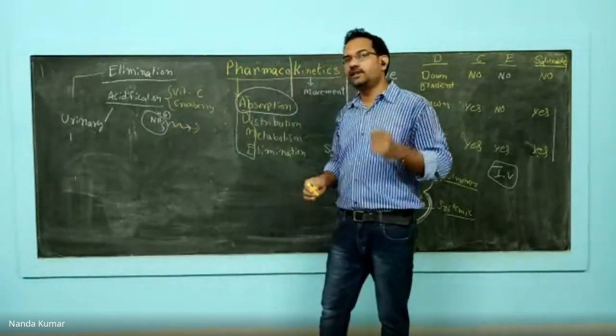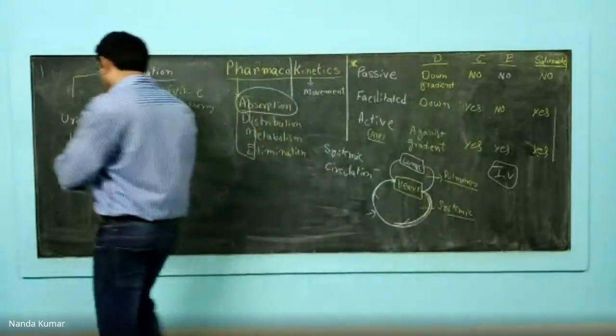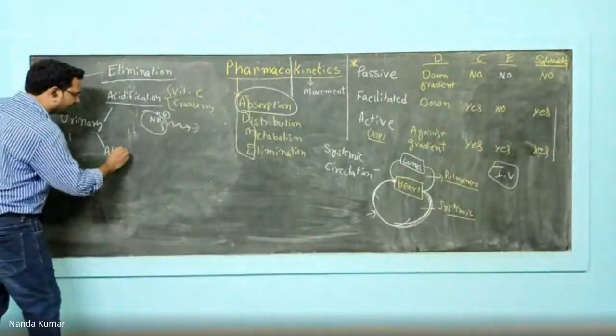When urine is acidified because of vitamin C, all the basic drugs turn into ionic form and ionic form drugs will get easily excreted out of the body. This is the logic behind urinary acidification.